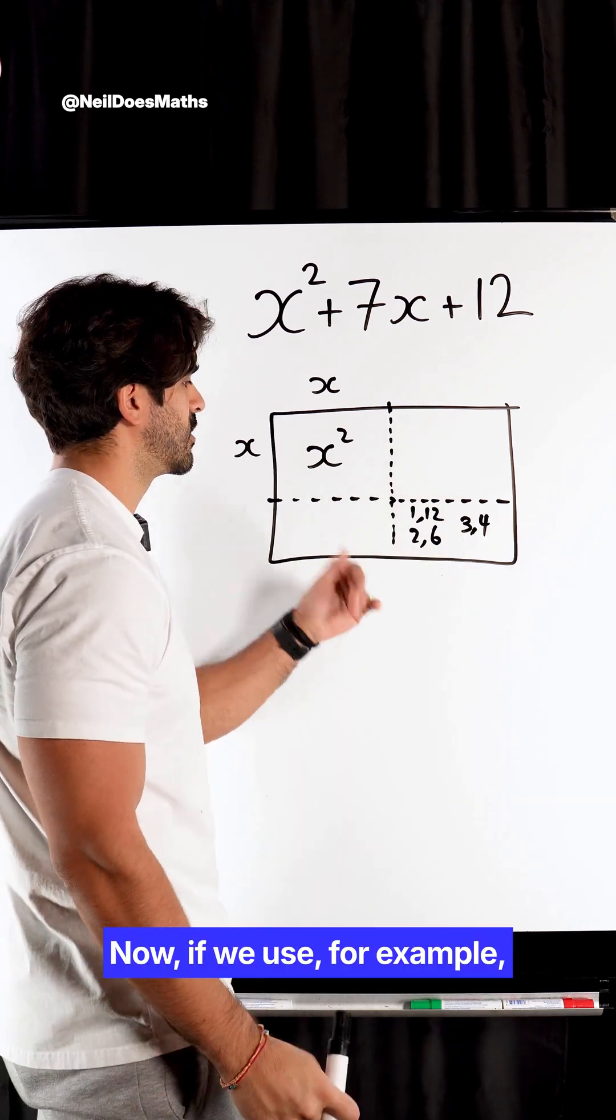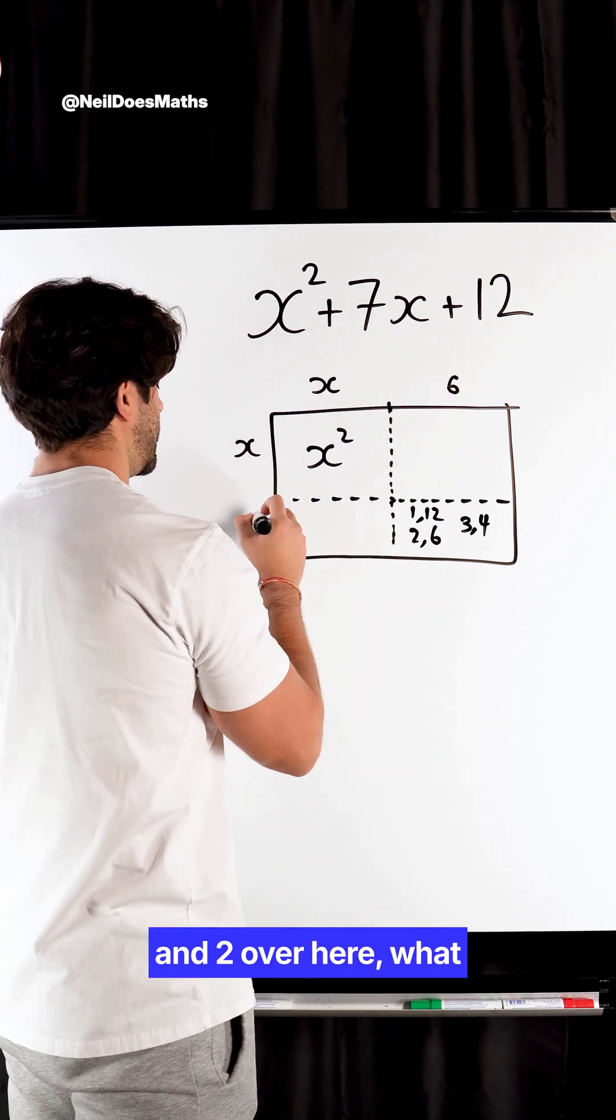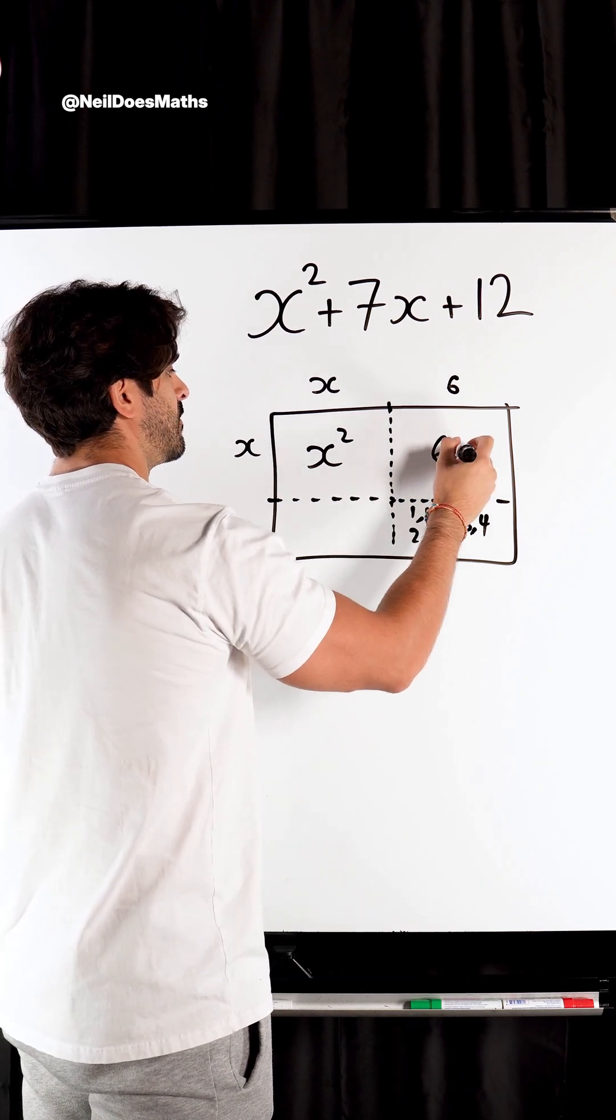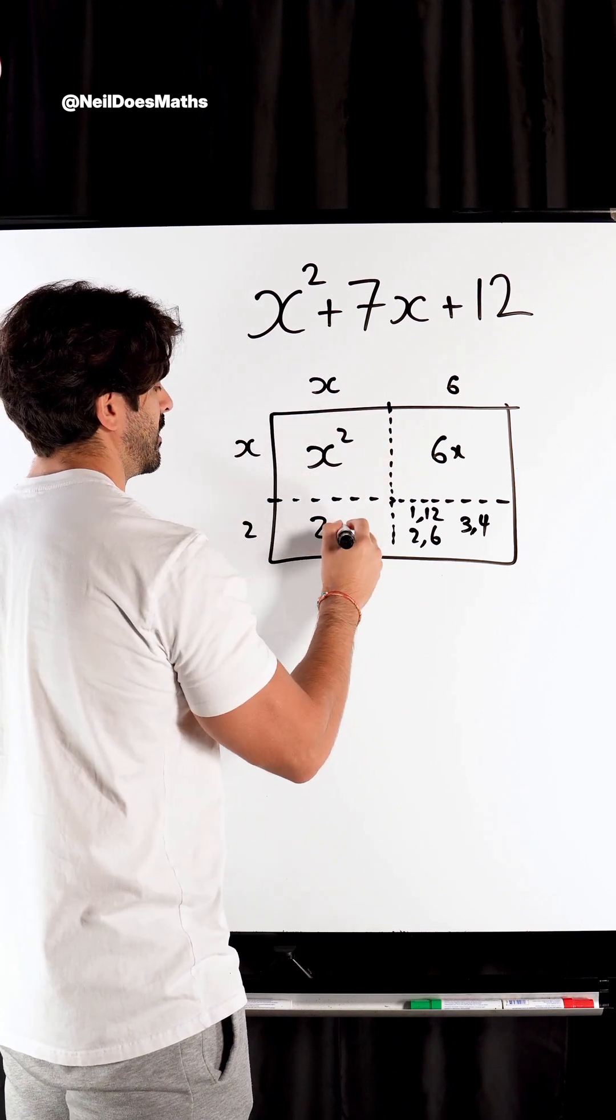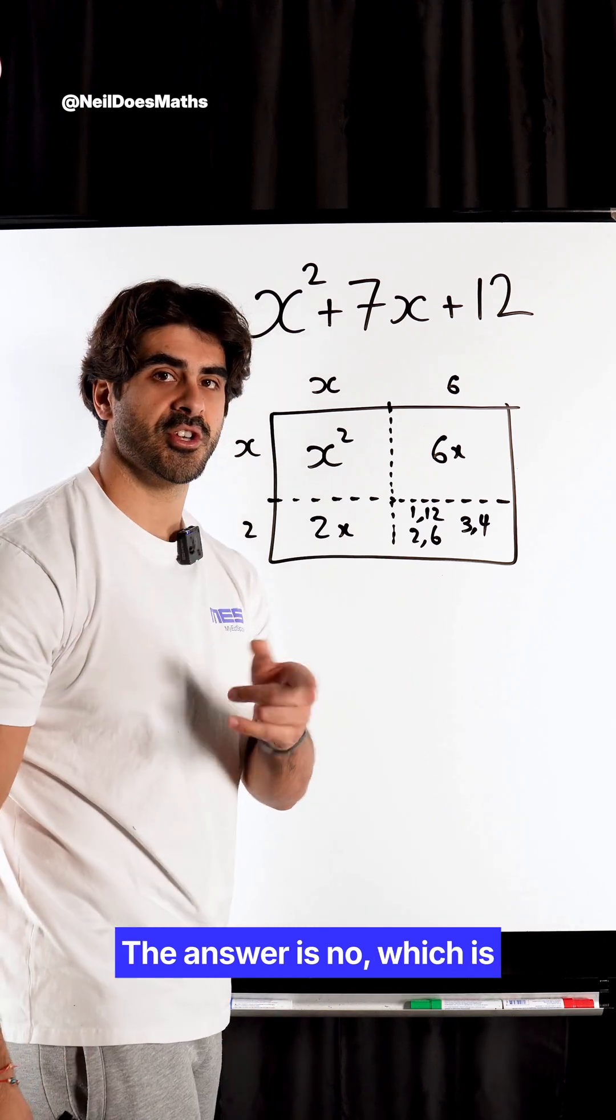Now, if we use, for example, 2 and 6, if I put 6 over here and 2 over here, what would the area of this be? It would be 6x. What would the area of this one be? It would be 2x. Do these two sum to give you 7x? The answer is no,